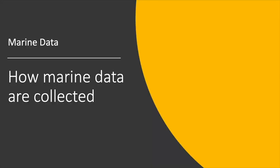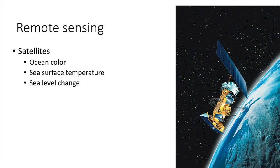So how are all of these data collected? The first way, which will probably look familiar based on the previous lectures, is remote sensing. So we can use satellites to measure ocean color, sea surface temperature, and sea level change. You just point the satellite at the earth and take your pictures. And then you can process that information into ocean color, sea surface temperature, and sea level change data products.